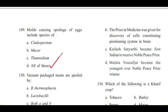Question 150 — the last question: Vacuum packaged meats are spoiled by — Brochothrix thermosphacta, Lactobacilli, both A and B, or none of these? Answer is C, both A and B.